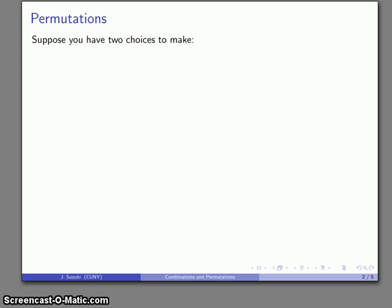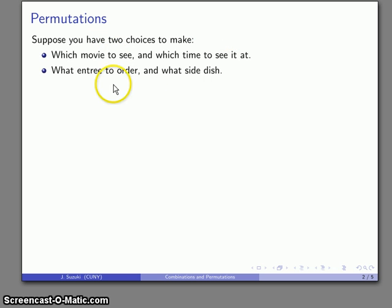Let's talk about permutations first, as they're a little bit easier. Suppose I have a couple of choices I want to make. For example, I want to choose a movie to see and then determine what time I want to see it. Or maybe I'm ordering an entree and have to figure out what the side dish is. Or maybe I'm choosing a list of courses, and each course has a couple of different times that it's offered in.